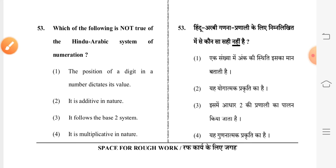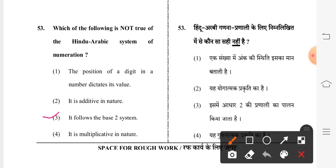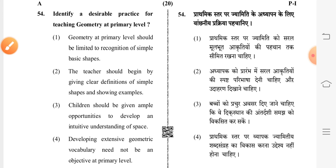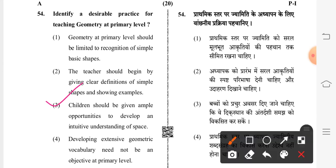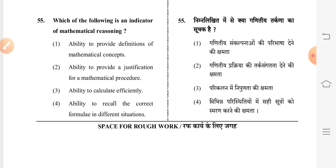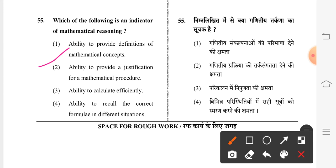Question 53: which of the following is not true of the Hindu-Arabic system of numeration? Third option is correct: it follows the base-two system. Question 54: identify a desirable practice for teaching geometry at primary level — third option is correct: children should be given ample opportunity to develop an intuitive understanding of space. Question 55: which of the following is an indicator of mathematical reasoning? Second option is correct: ability to provide a justification for a mathematical procedure.